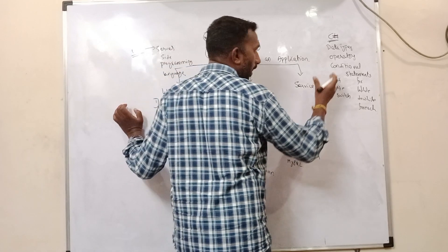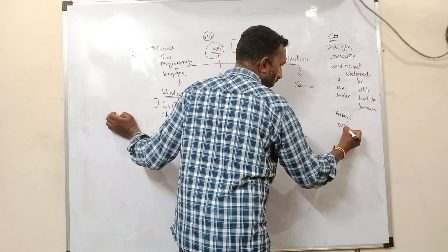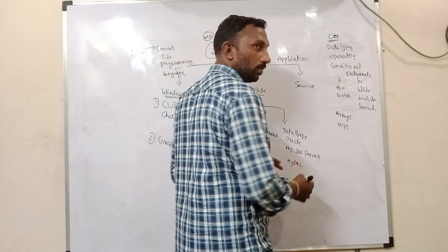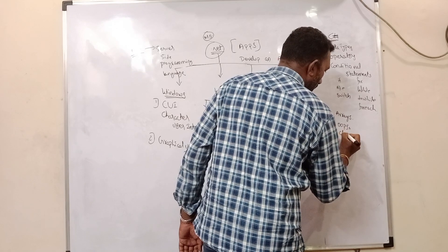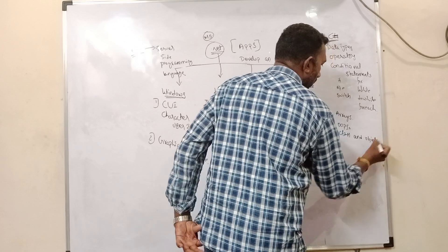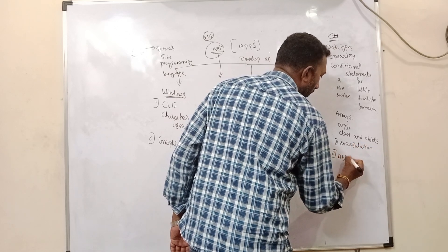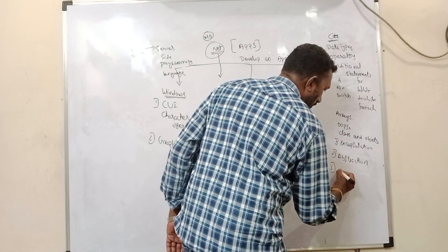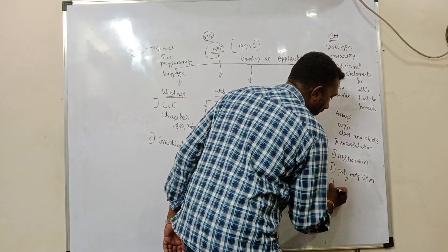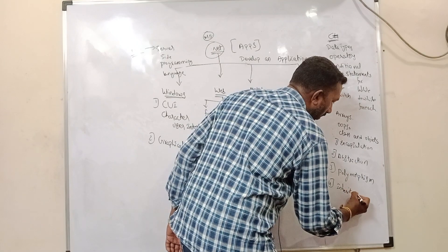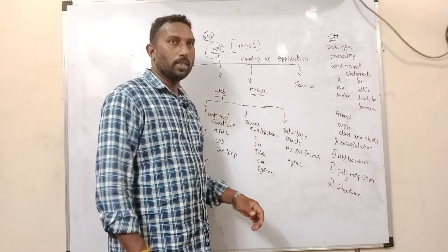In C#, we also use for-each for collections like arrays. We'll cover arrays — why we use them and the different types. Next, we have Object-Oriented Programming principles: encapsulation, inheritance, polymorphism, and abstraction. We'll learn everything in detail using classes and objects. We'll cover what encapsulation and abstraction are, types of polymorphism — compile-time and run-time, function overloading and overriding — and inheritance, where child classes inherit base class properties.